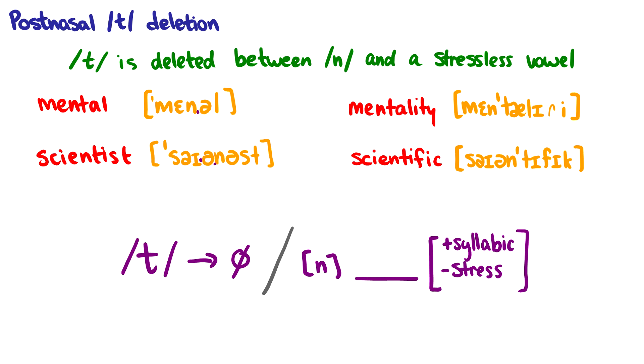Okay, so the rule that we can say here is a deletion rule. So we can say that t becomes a nothing. In other words, t deletes, when there's an n before it. And afterwards, there is a syllabic sound, so these are vowels, and there's no stress.